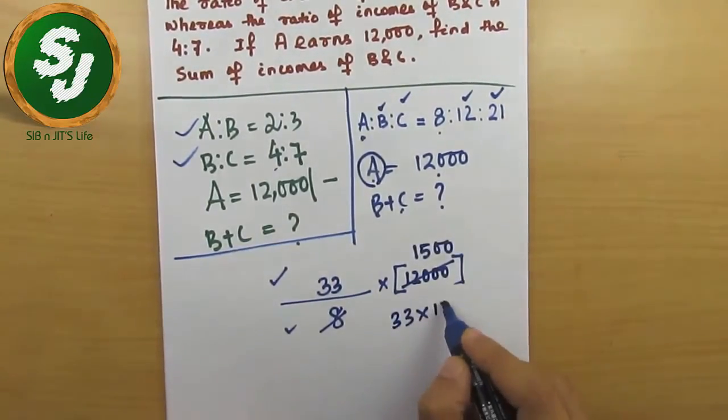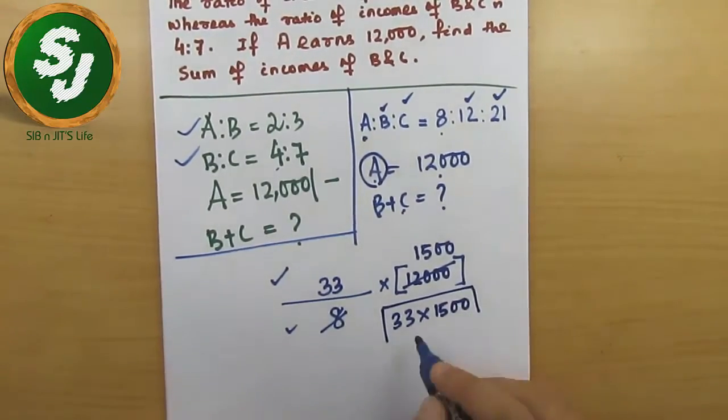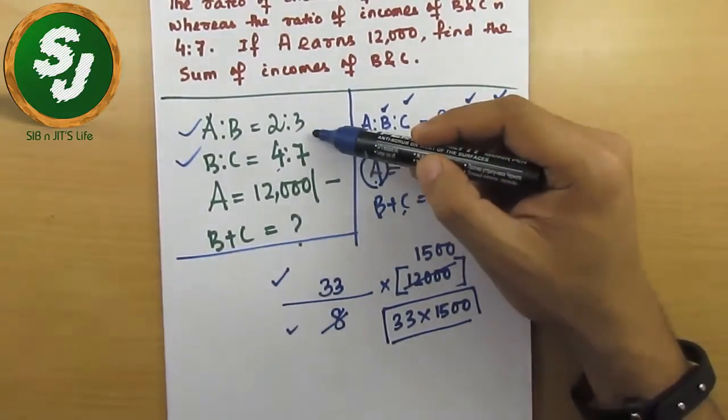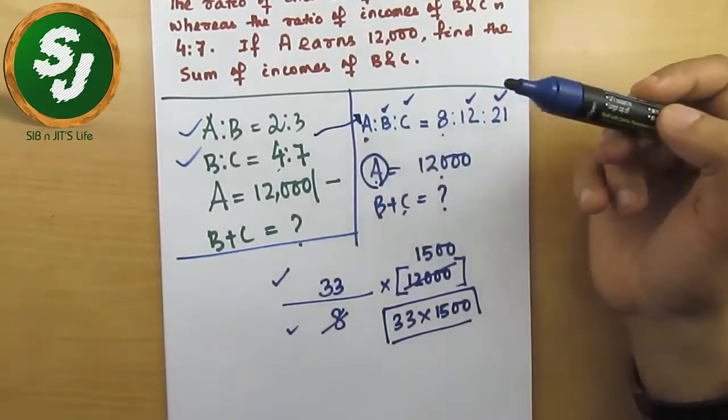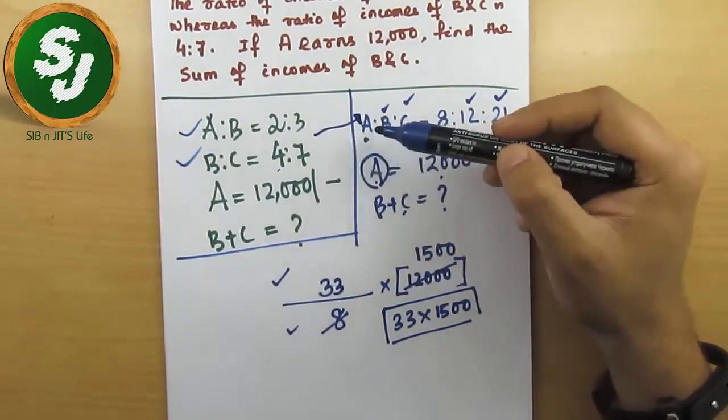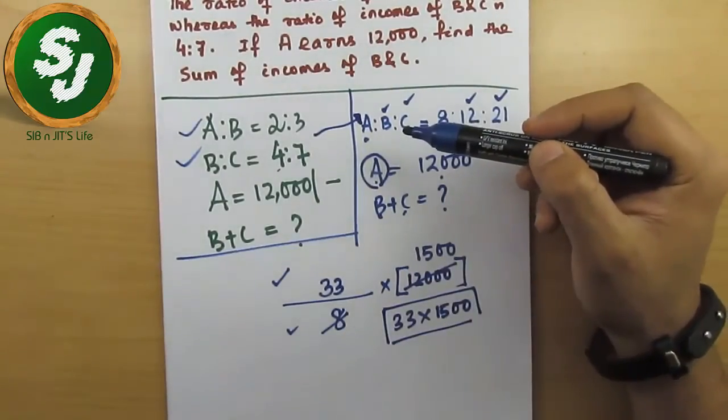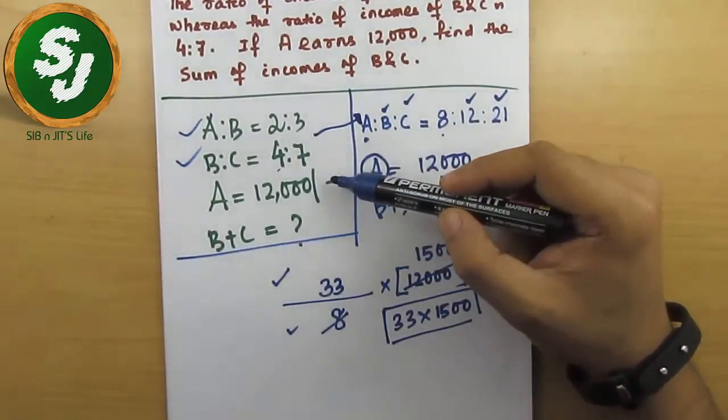In this video you have to understand why I combined these two and made it one. A is to B was given, B is to C was given, but I combined them to make it one ratio A is to B is to C, and another information was given, another question was asked.